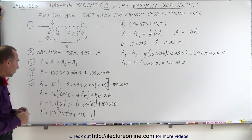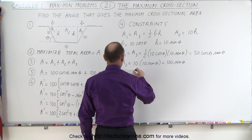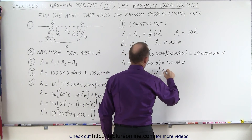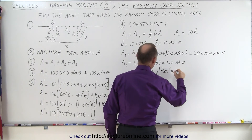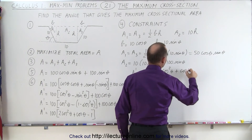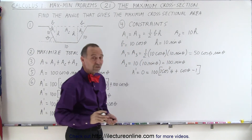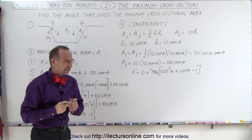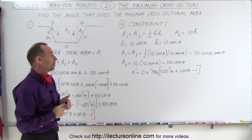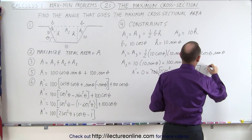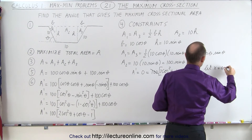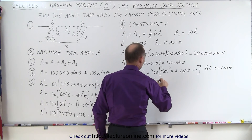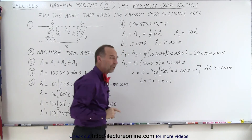Setting A' equal to zero: 0 equals 100 times the quantity 2 cosine squared theta plus cosine theta minus 1. Dividing both sides by 100, we substitute X equals cosine theta. This reduces to 0 equals 2X squared plus X minus 1, which is a much easier equation to solve.